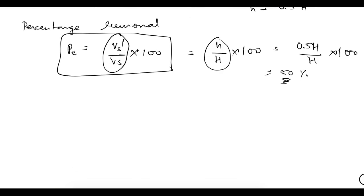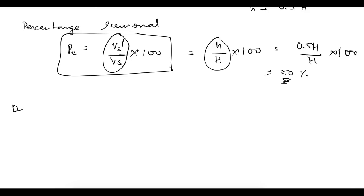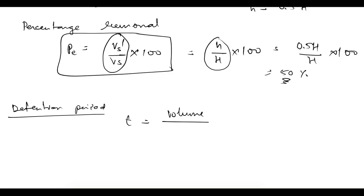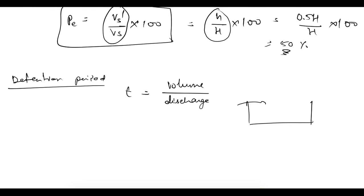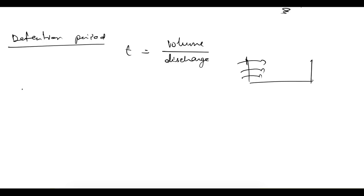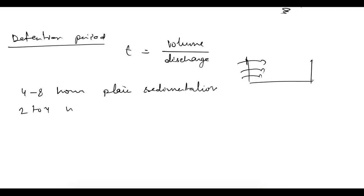After that, there are some additional concepts. Retention period is simply Volume / Discharge — it means how much time the water is kept in the tank. The retention period for a plain sedimentation tank should be between 4 to 8 hours, and for sedimentation with coagulation it is 2 to 4 hours.